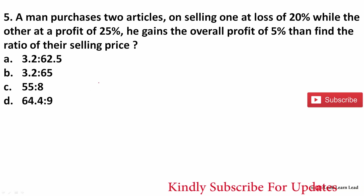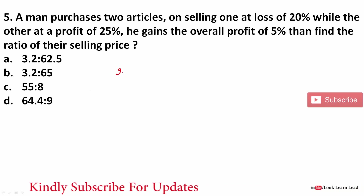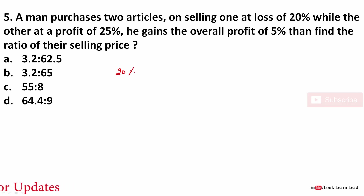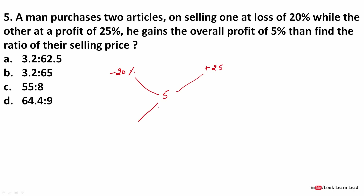Next question: a man purchases two articles — selling one at a loss of 20% and the other at a profit of 25%, with an overall profit of 5%. We can solve this using the mixture and allegation method. Using allegation: (25 - 5) = 20 on one side, and (5 - (-20)) = 25 on the other, giving a ratio of 4:5.